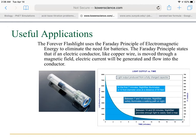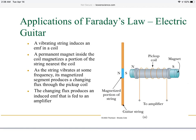Things like the Forever Flashlight use Faraday's principle, which states that if an electrical conductor like a copper wire is moved through a magnetic field, an electric current will be generated and flow into the conductor — removing the need for a battery. It can also be used in electric guitars, where vibrating strings induce an EMF in the coil. A permanent magnet inside the coil magnetizes a portion of the string nearest the coil, and as the string vibrates, its magnetized segments produce a changing flux through the pickup coil, which produces an induced EMF that is fed to the amplifier.